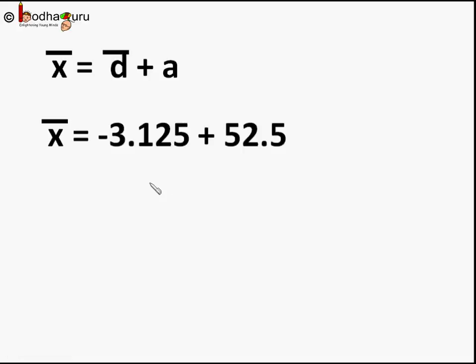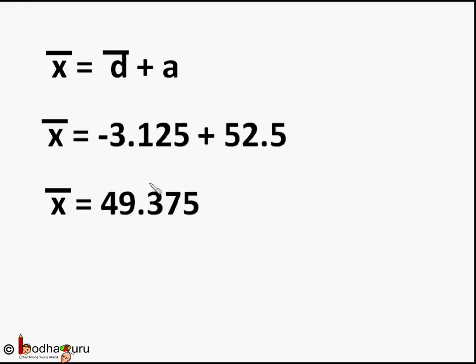So x̄ equals d̄ plus a, that is minus 3.125 plus 52.5. Minus 3.125 is the d̄ we calculated, the mean of deviation, and 52.5 is the assumed mean we took earlier. Which is equal to minus 3.125 plus 52.5, that is equal to 49.375. So we found the same mean when we used direct method or assumed mean method. But this assumed mean method is less time-consuming as it involves simpler calculations.